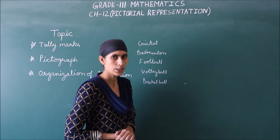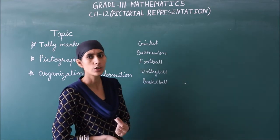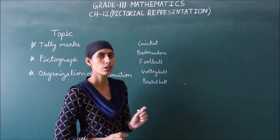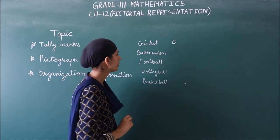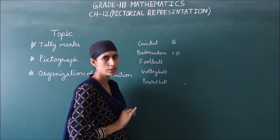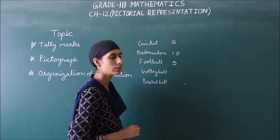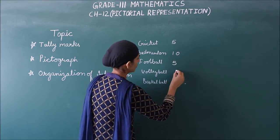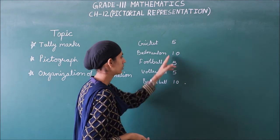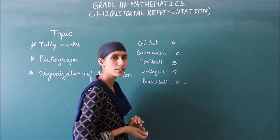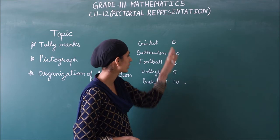I have asked a number of students in the class — suppose there are 30 students. I asked them which of these 5 games is their favourite. I have 5 students who like cricket, 10 students who like badminton, 5 students who like football, and 5 students who like volleyball. Now, how do we represent this data?